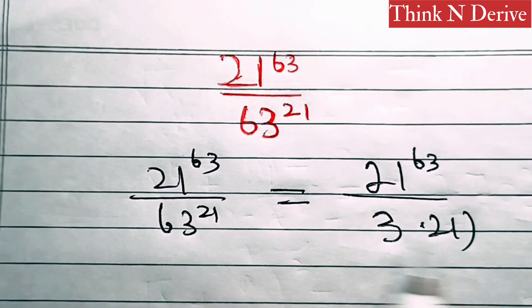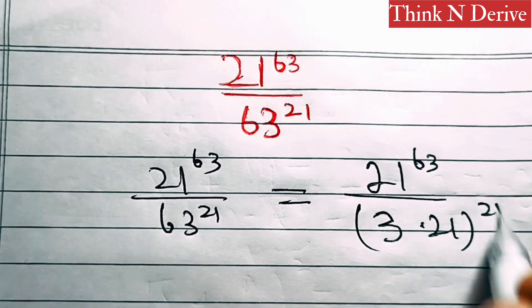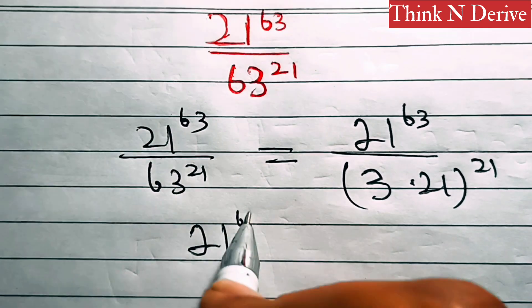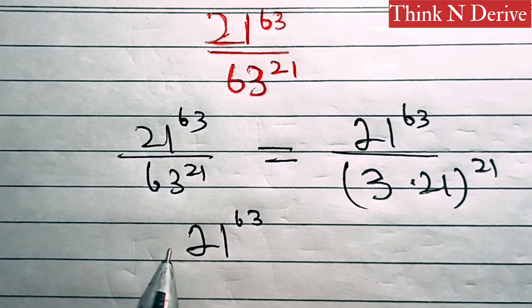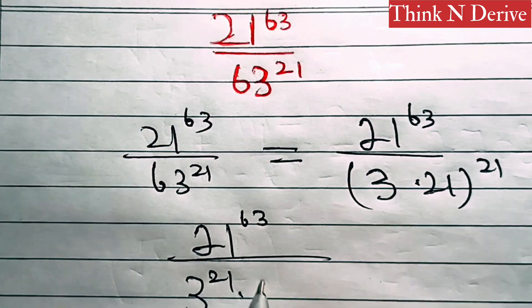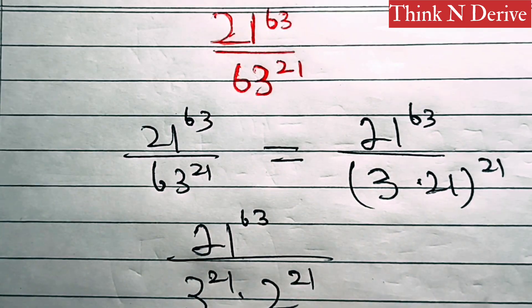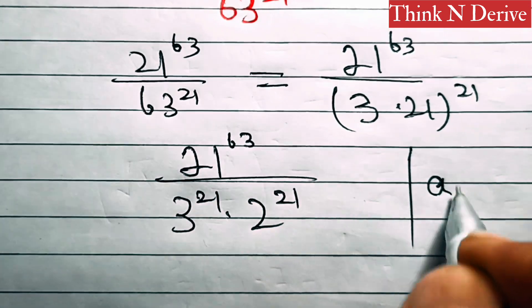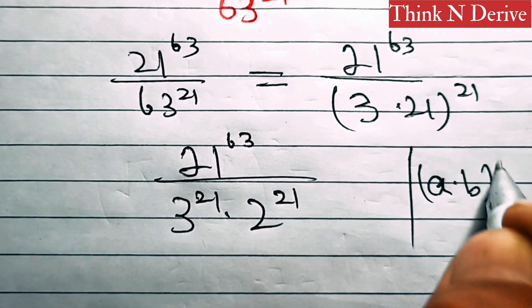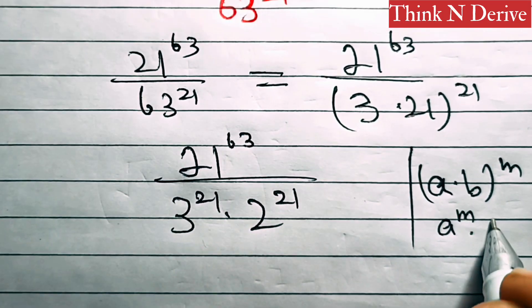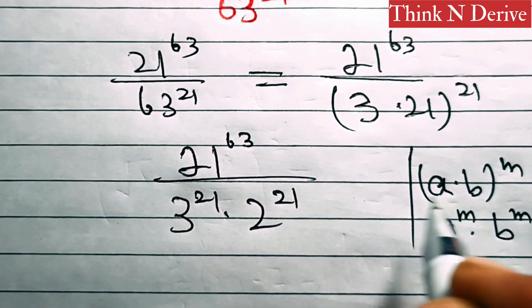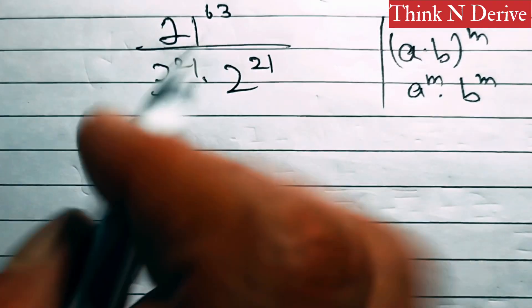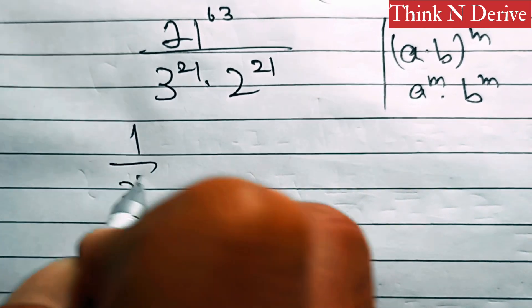63 can be written as 3 times 21, so this becomes 21 power 63 over 3 times 21, whole power 21. In the next step, this is 21 power 63 over 3 power 21 times 21 power 21, because we know by the exponential rule: (a times b) power m is equal to a power m times b power m.